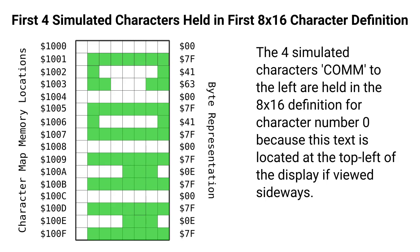So the screen map would just have character 0 representing those four characters, or at least the location where those four characters are going to be stored. And then the character definition for that C-O-M-M — those four 4-bit wide characters — would occupy memory in the way shown on the screen.